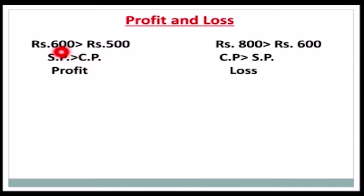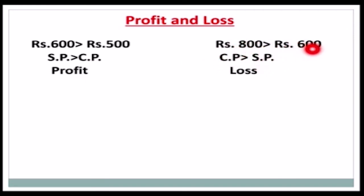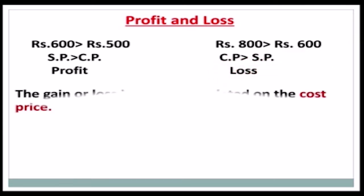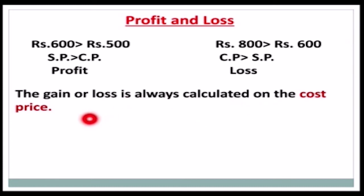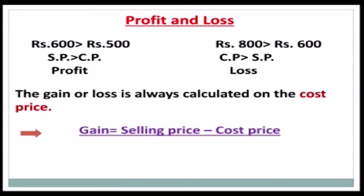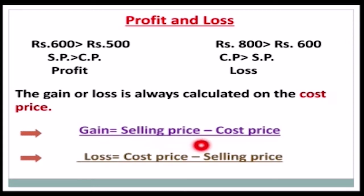Now we will discuss profit and loss. If the selling price is rupees 600 and the cost price is rupees 500, the selling price is greater than the cost price, so there is a profit. If the cost price is rupees 800 and the selling price is rupees 600, the cost price is greater than the selling price, so there is a loss. Note that gain or loss is always calculated on the cost price. The formulas are: Gain = Selling Price − Cost Price; Loss = Cost Price − Selling Price.